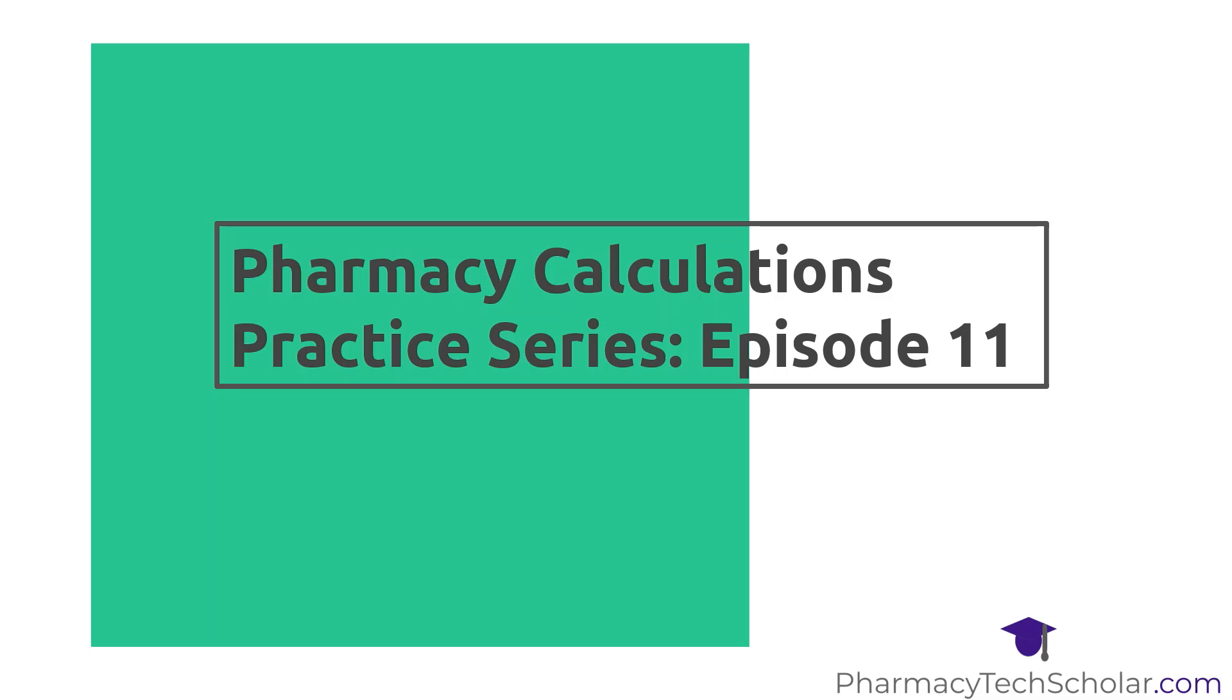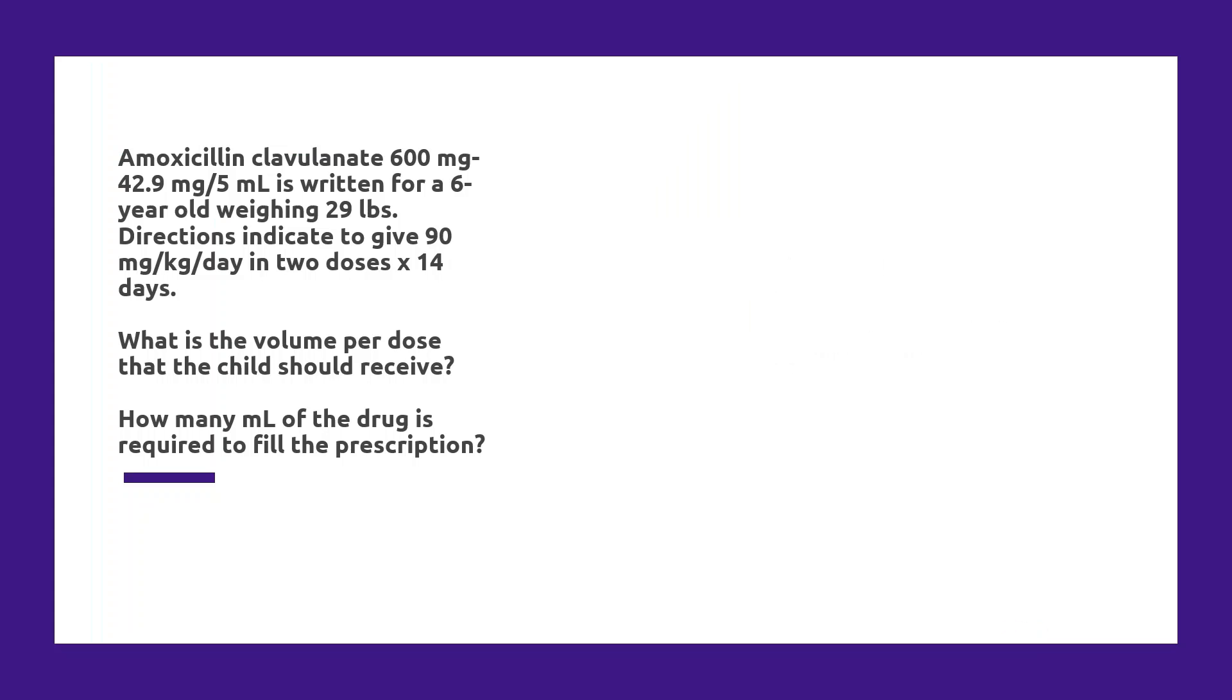Hi there, and welcome to our 11th episode in our pharmacy calculations practice series. This question was posed on our Facebook study group, and it states that amoxicillin clavulanate 600 mg-42.9 mg per 5 mL is written for a 6-year-old weighing 29 pounds. The directions indicate to give 90 mg per kg per day in two doses times 14 days.